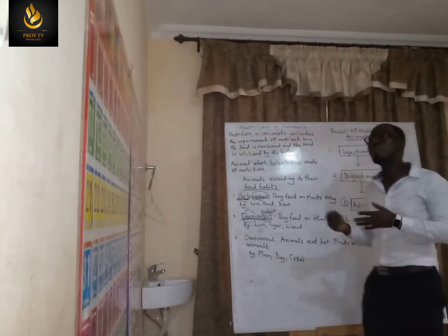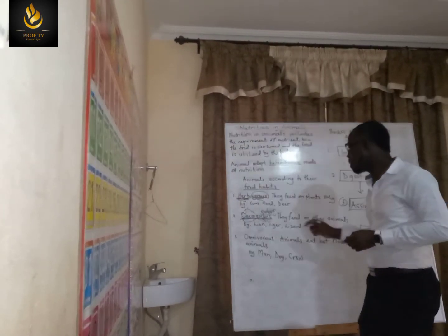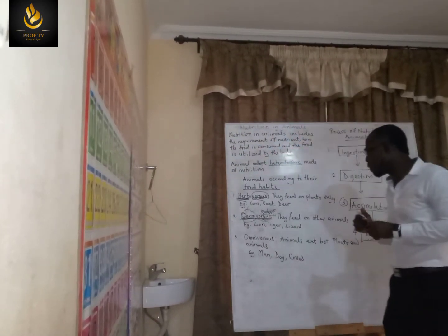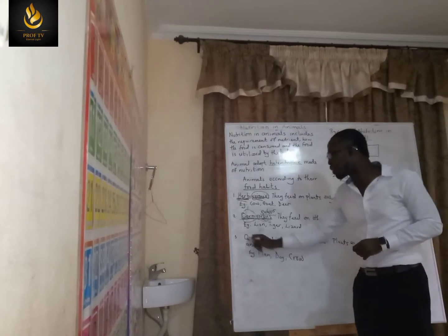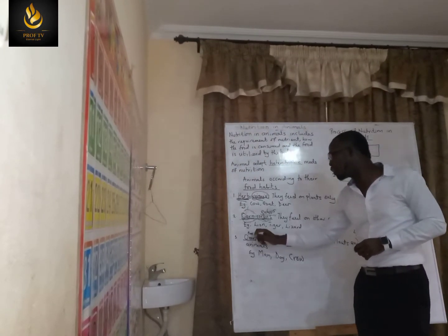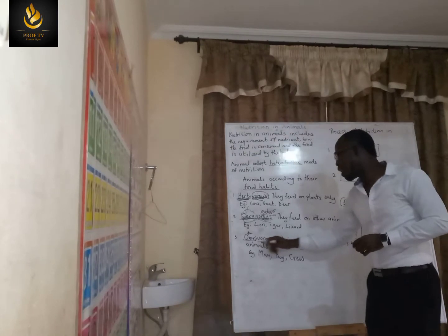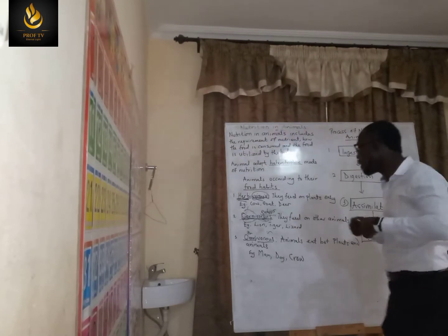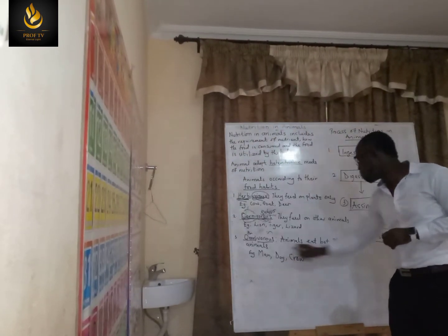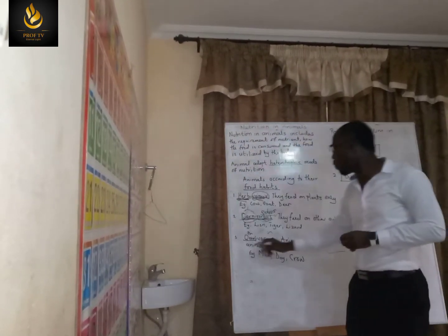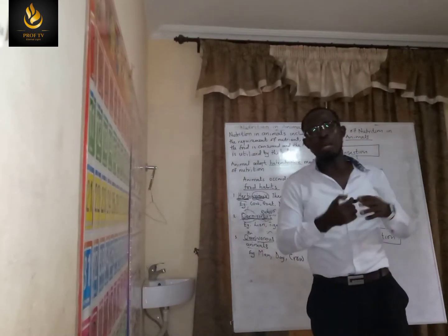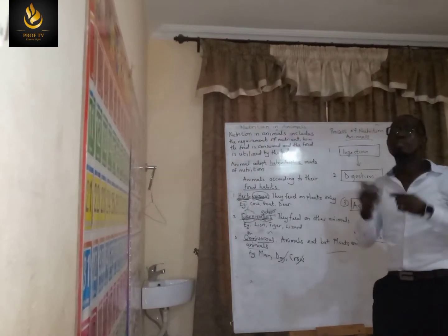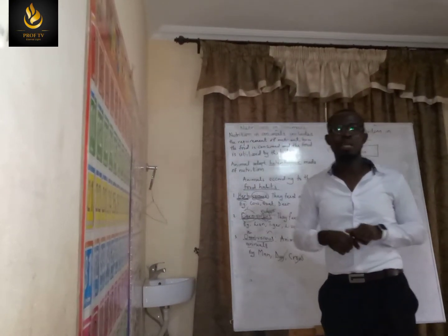Then we have the third one, which is omnivores. Omnivores are animals that depend on plants and other animals. 'Omni' means multi or many, and 'vores' is eaters, so omnivores means many-eaters. They depend on both plants and animals. Examples include man, dog, crow, and many others.